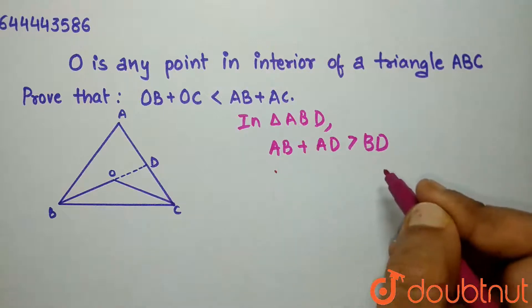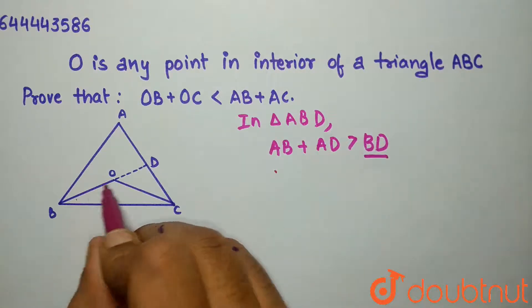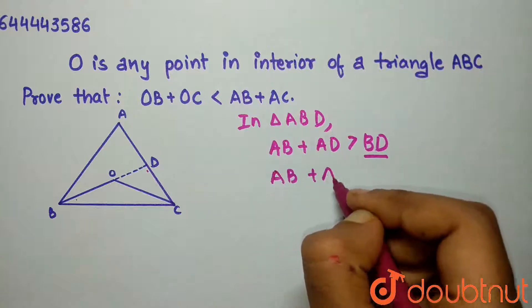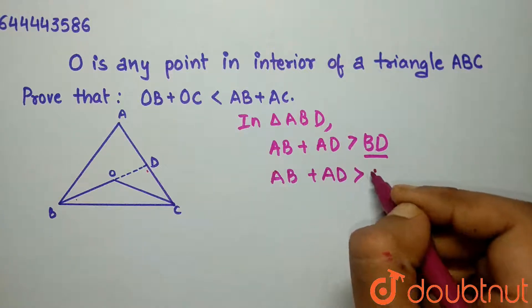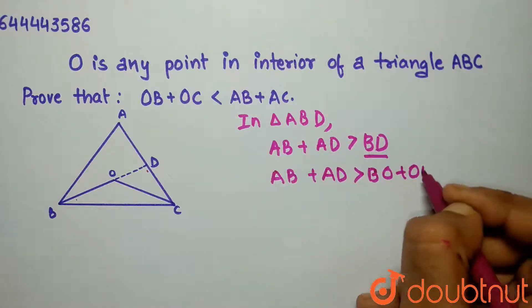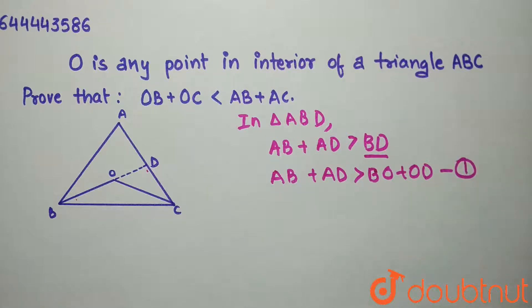According to this, BD can be written as BO plus OD. Therefore, AB plus AD is greater than BO plus OD. Let this be equation 1.